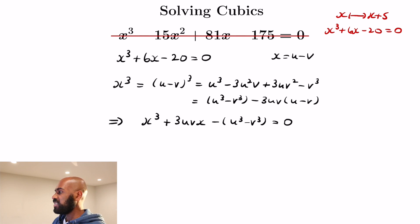If we actually set these coefficients like 3uv to be 6 and u cubed minus v cubed to be 20, then solving for u and v will actually figure out values of u and v, and that will give us what x could be. And so that's what we'll do.